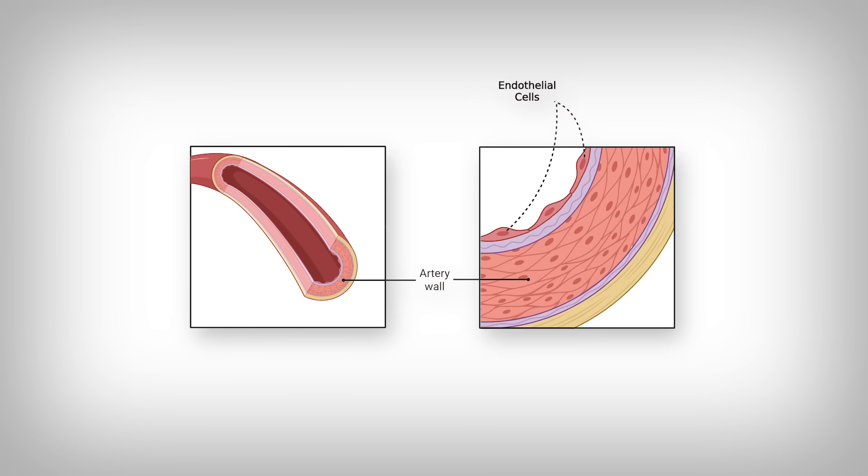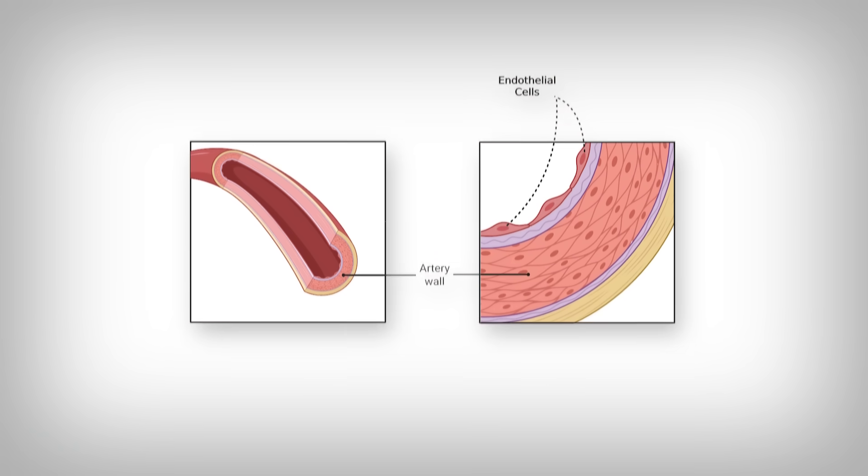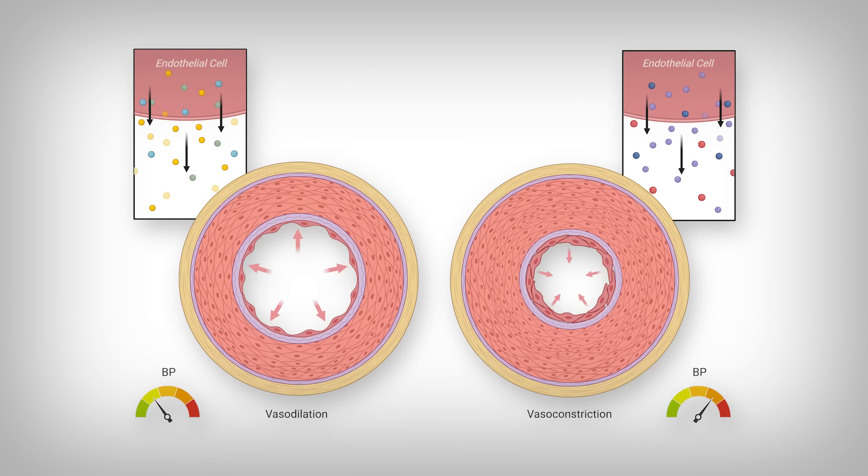So why, and how do we fix it? The reason comes down, at least in a major way, to these cells that line your arteries called endothelial cells. Endothelial cells control the expansion and shrinking of your arteries, reducing and increasing blood pressure through the release of molecules that interact with nearby cells, and they do so much more. For now, just know that healthy endothelial cells are critical to good health, especially in relation to cardiovascular health.